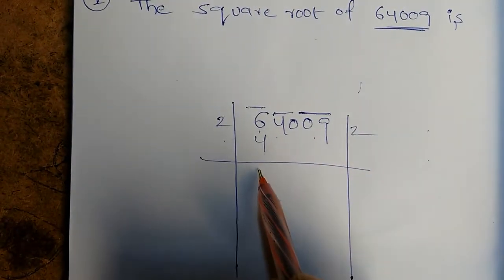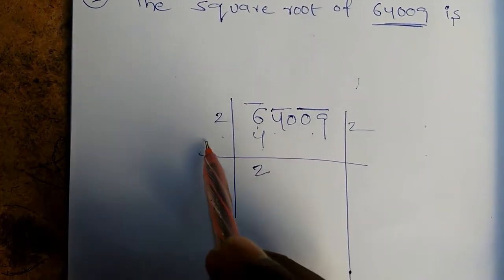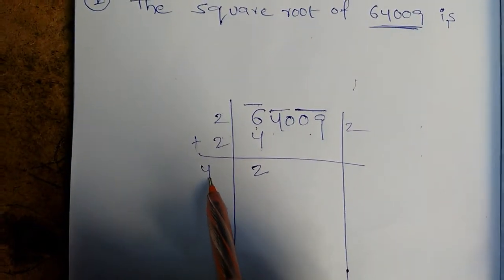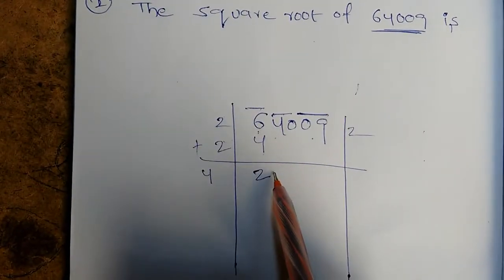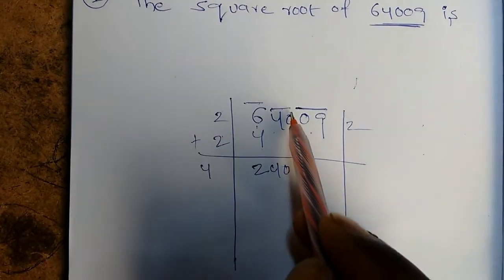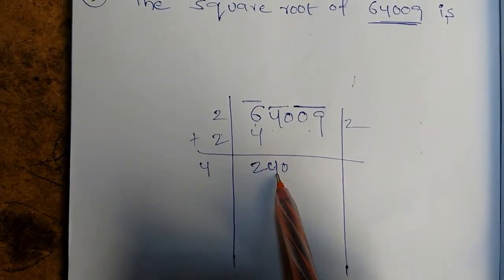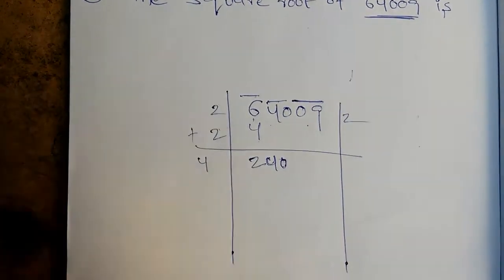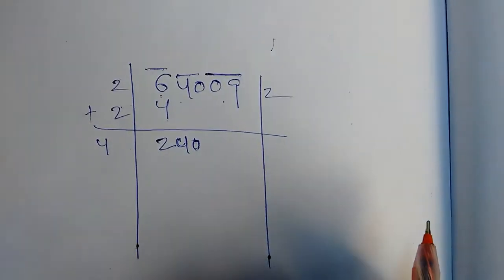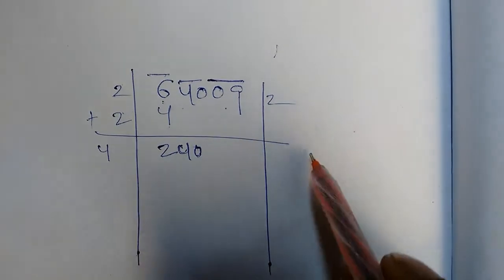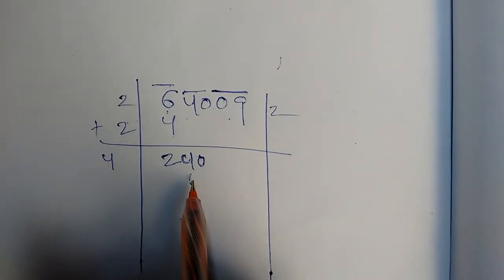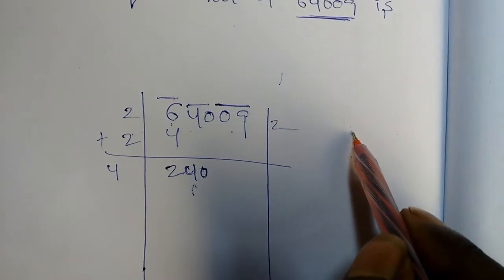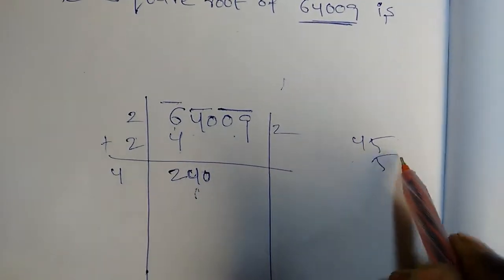2 to 4, here is the double 2 to 4. We can see 2 digits. 3, 4. 2 to 4, 2 to 4. 45, 25.